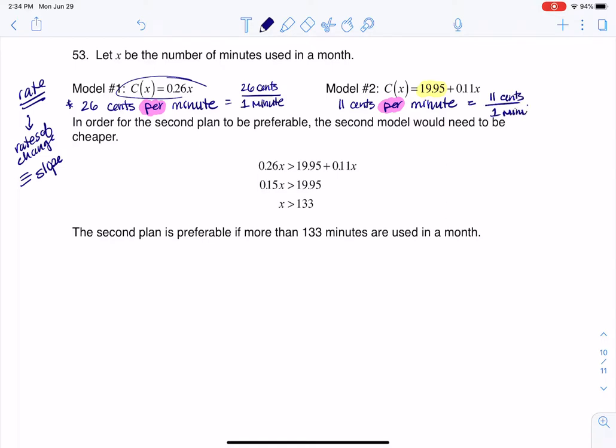But there is a fixed cost on this plan, because they're going to charge you $19.95, regardless of if you talk or not. And that right there is your Y-intercept. That is your fixed cost. Your Y-intercept is if you talk for zero minutes, they're going to charge you $19.95.